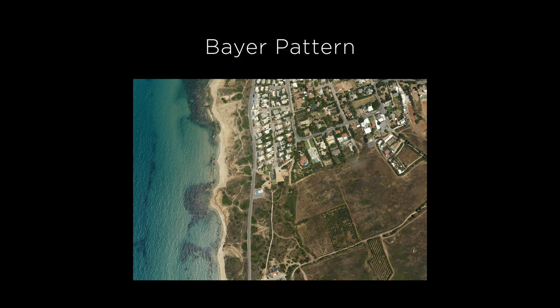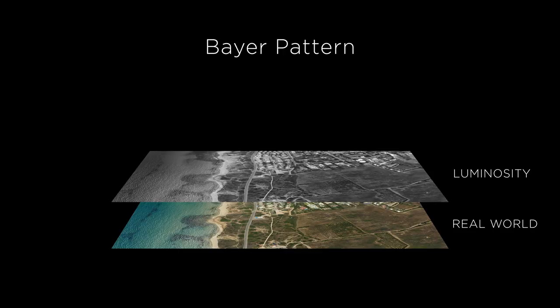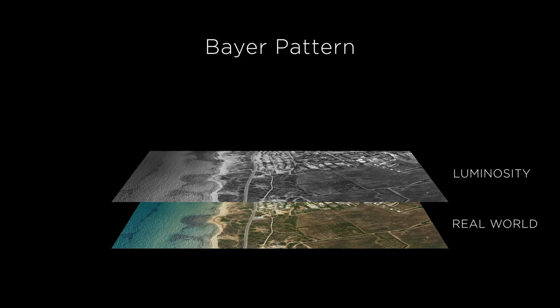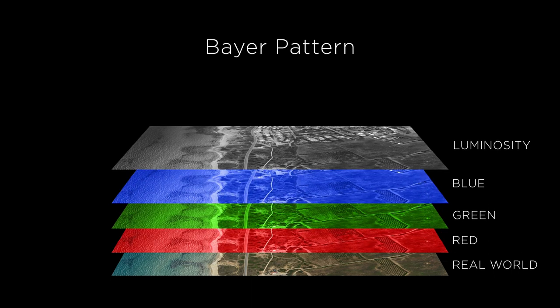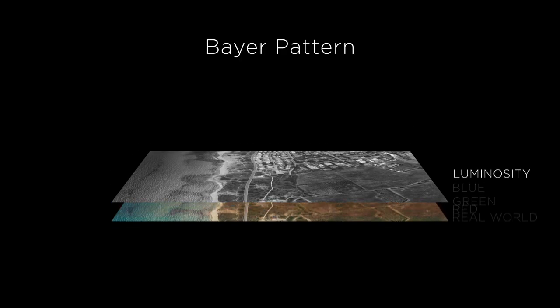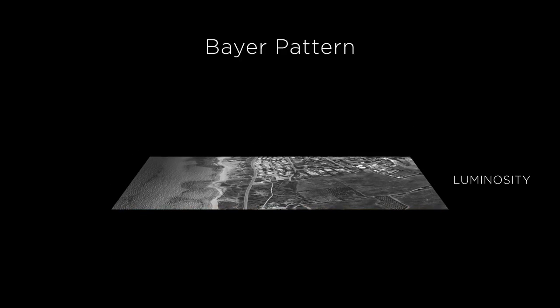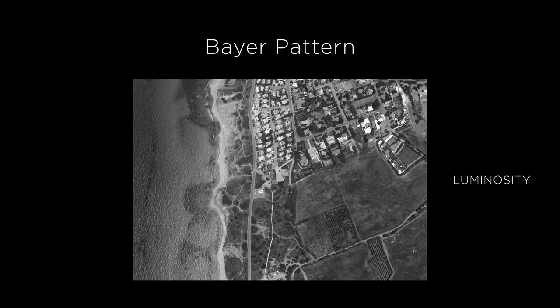When creating a color image from the Bayer data, we first extract a full resolution luminosity image. Real world objects have real natural colors, typically containing some of both red, green, and blue light. This causes a strong correlation between the Bayer pixels, so we can use all of these pixels to reconstruct the luminosity image at full native sensor resolution.